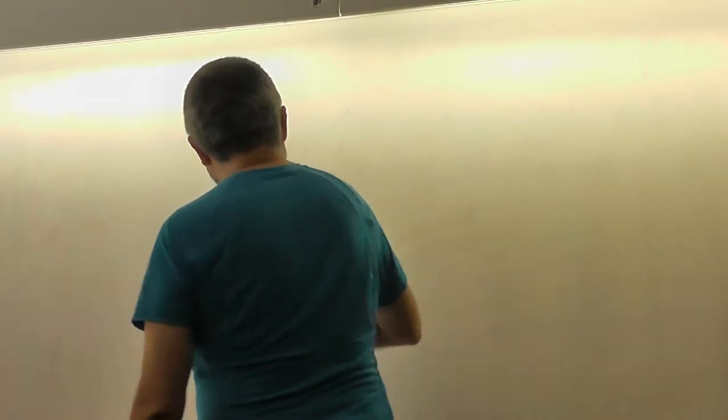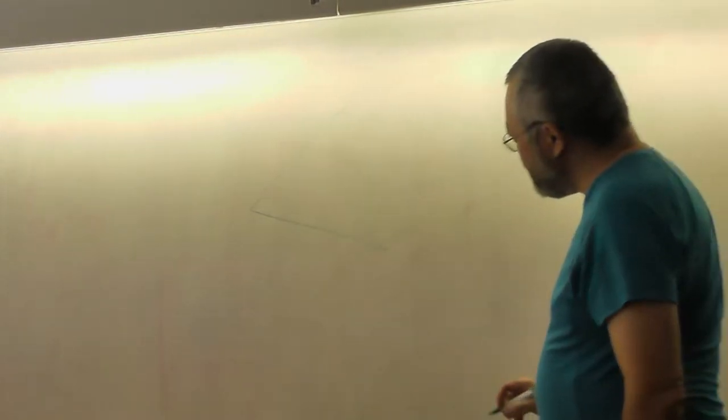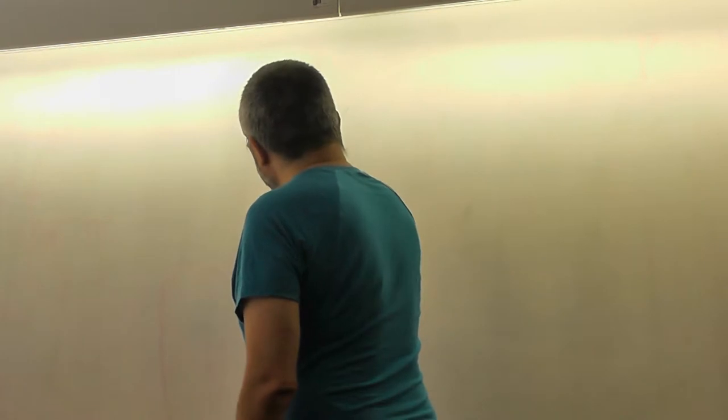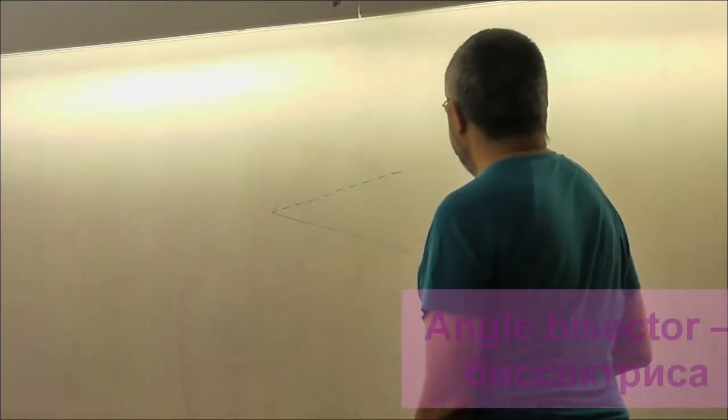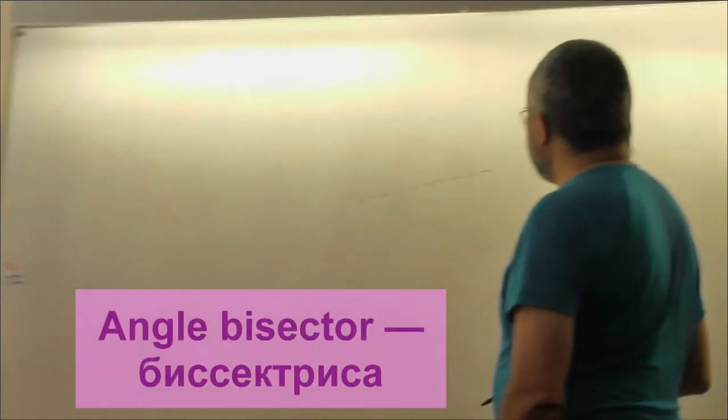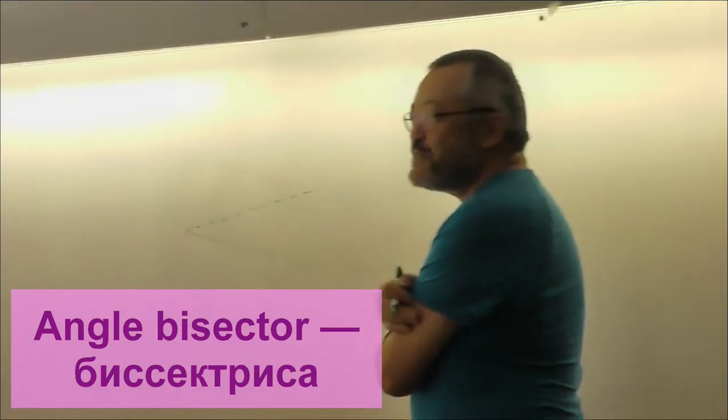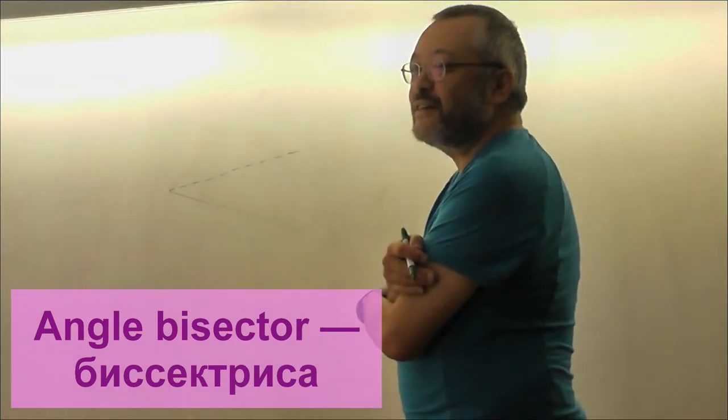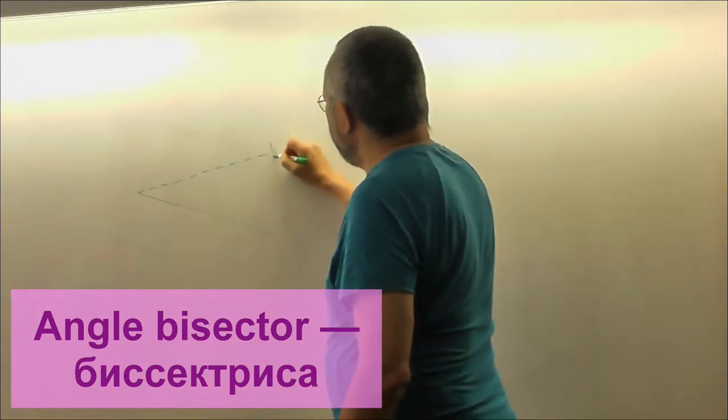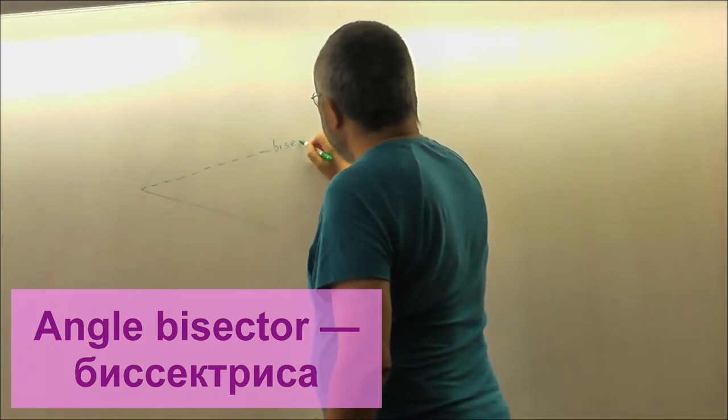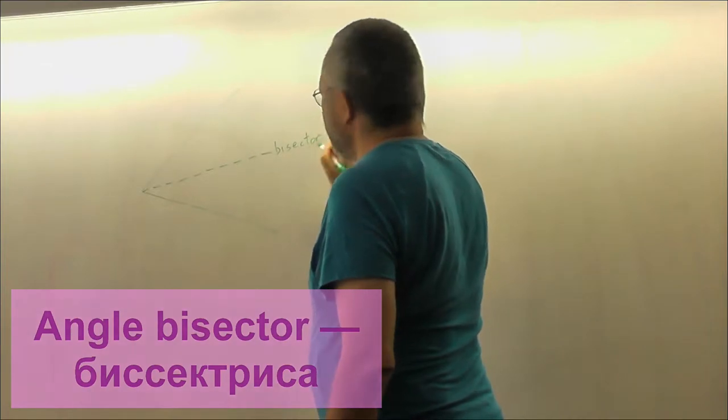So there is an angle, and if we divide this angle into equal parts, this is a line in Russian, and in English I think it is bisector, or how it is called, bisector line, just like this.